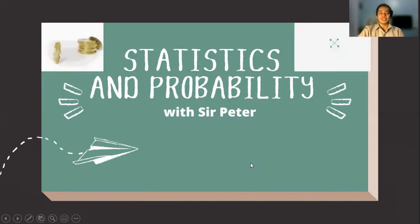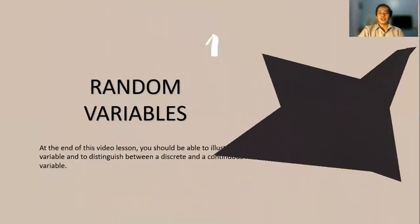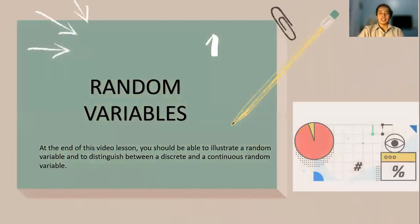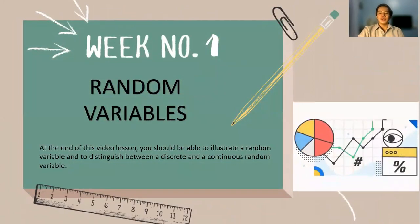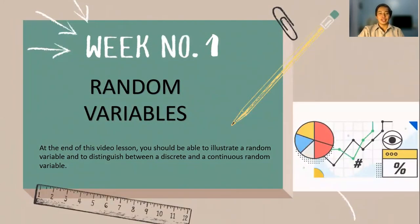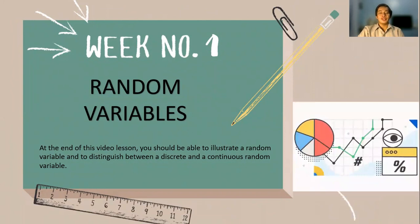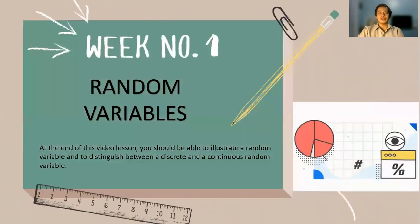A pleasant day STEM learners, this is Sir Peter, your statistics and probability teacher. So this is now the start of our quarter three, week number one, and for this video lesson, we will talk about random variables. So you should be able to illustrate a random variable and to distinguish between a discrete and a continuous random variable.